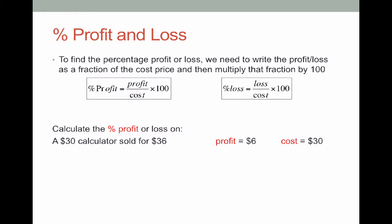So what we do is write this profit and this cost as a fraction, 6 out of 30. Then we multiply that fraction by 100 to get the percentage profit. In this case, 20%. So we made a 20% profit by selling the $30 calculator for $36.